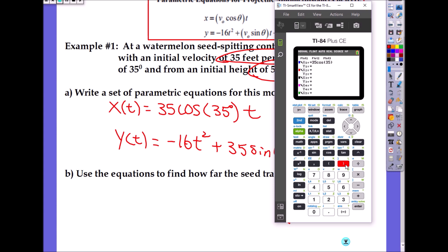You put 35 cosine of 35 degrees—close the parentheses, that's very important—and multiply by t. Then you do negative 16t² (you can press the variable button) plus 35 times sine of 35 degrees times t. What was the initial height? Five.